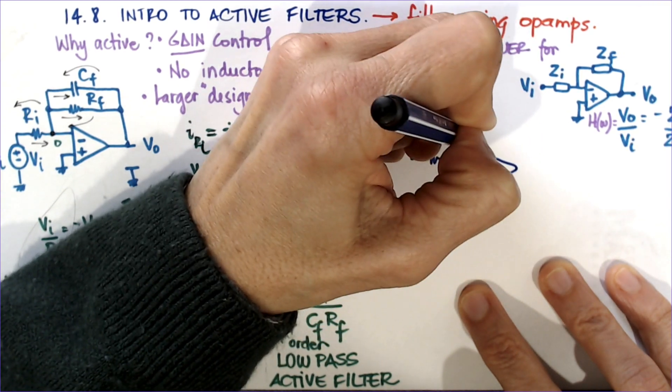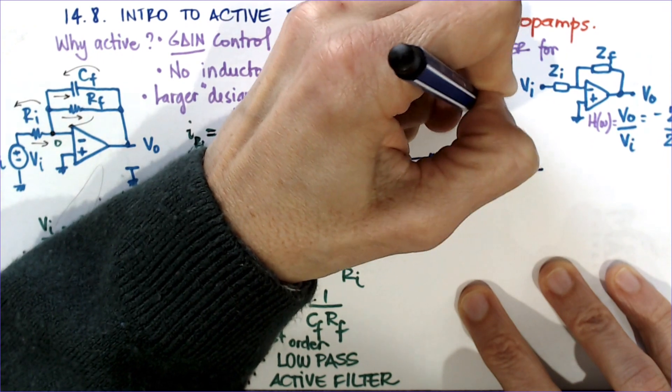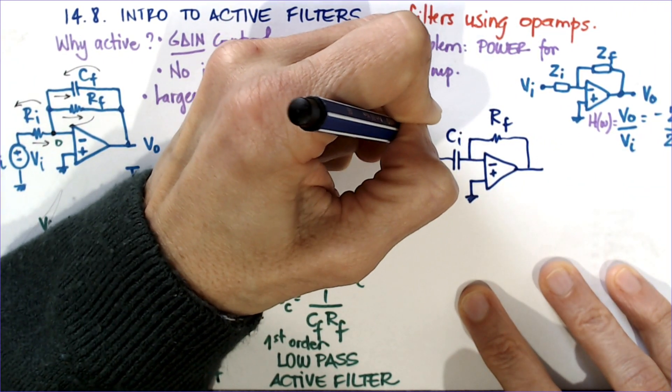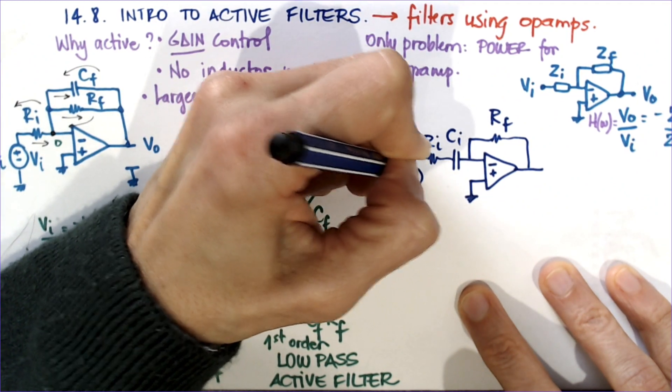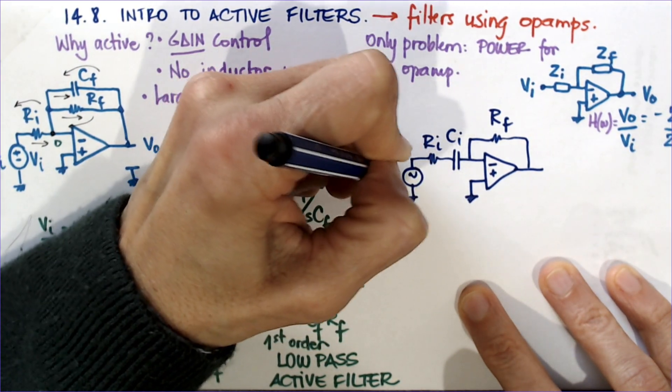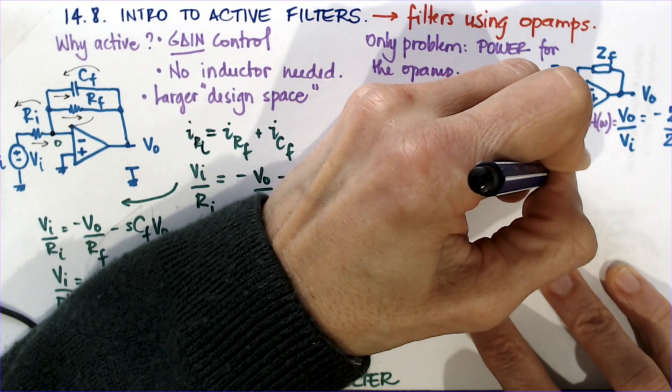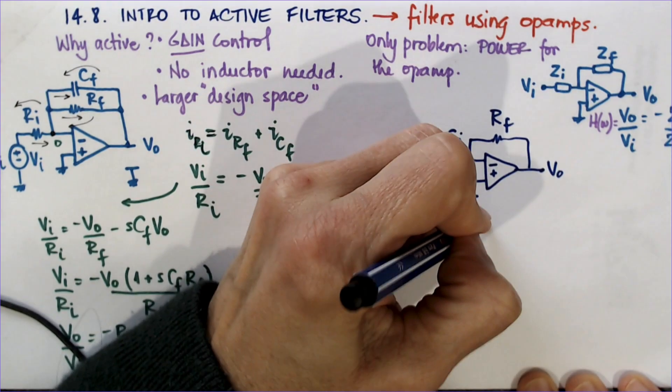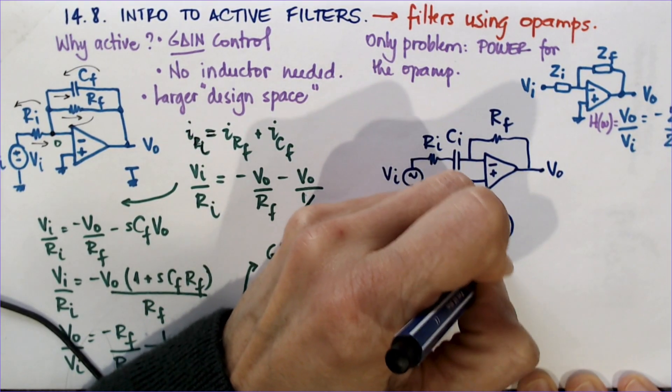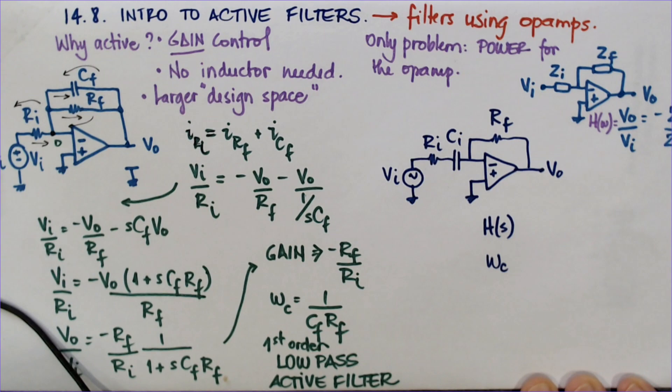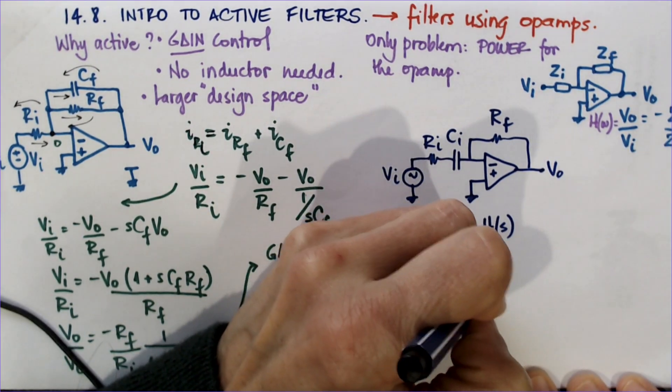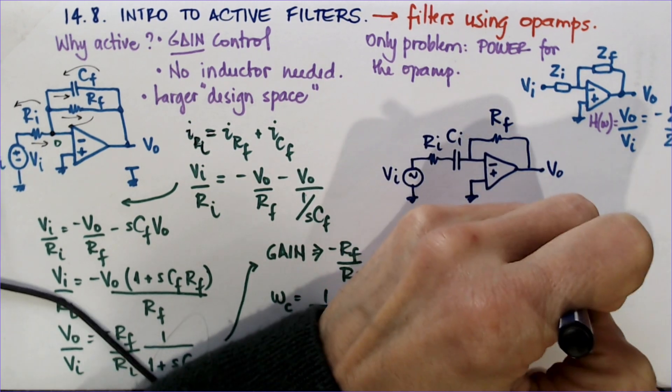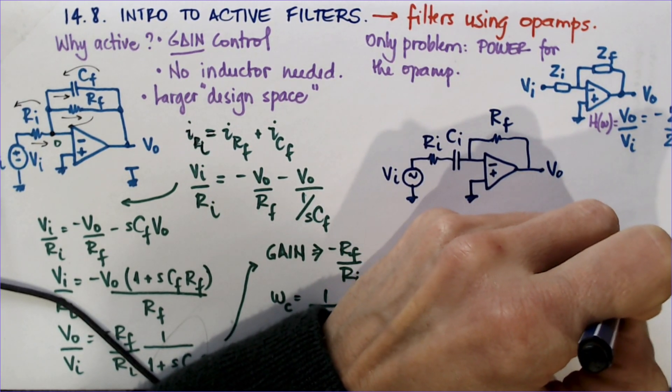Why and how this is a high-pass filter. So this is RF, this is CI, RI, and this is VI and VO. I'd like you to find H of S and to find the cutoff frequency for this. And this is a first-order high-pass active filter.